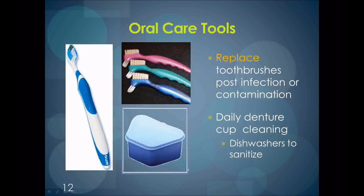Denture cups can harbor bacteria and fungus if they are not cleaned well and regularly. When cleaning denture cups, care should be taken to thoroughly clean the box. Every day, the box should be emptied of the solution the denture was soaking in overnight and rinsed and dried thoroughly. Often missed when cleaning denture boxes are the ridges on the lid — it's very important to clean these and make sure they are dry. Dishwashers can also be used to clean denture cups, as long as the dishwasher meets approved food safety regulations by having a sanitizing cycle with a wash, rinse, and sanitizing final rinse using hot water or chemicals.